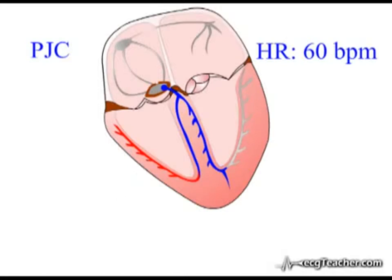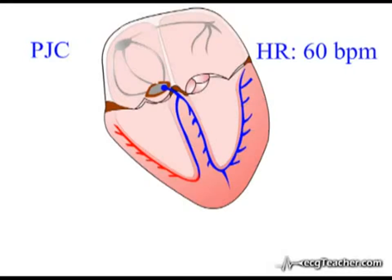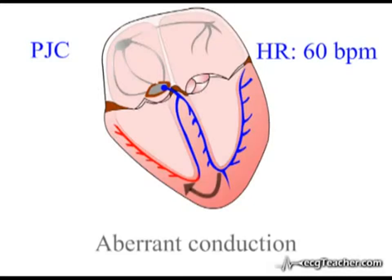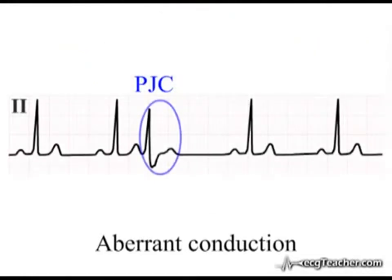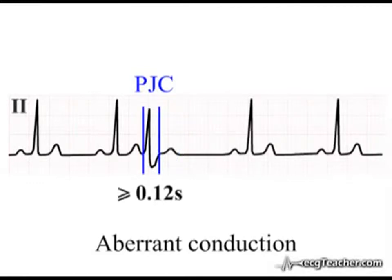The initial events of the QRS complex associated with this premature discharge are conducted as normal through the left bundle branch and will depolarise the left ventricle in the normal fashion. However, once the premature depolarisation wave encounters the refractory portion of the right bundle, the right side of the heart must be depolarised by signal travelling outside the conducting system. Aberrant conduction by direct cell-to-cell contact outside the conducting system results in a broad QRS complex with right bundle branch block morphology.